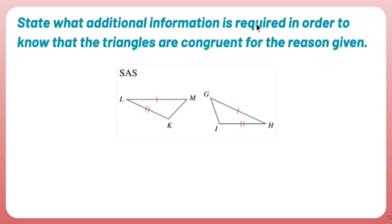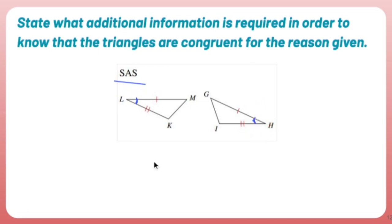State what additional information is required to prove the triangles congruent by SAS. SAS requires a side, an included angle, and a side. The two sides given are FL and GL on one triangle, and GH and IH on the other. The angle must be in between the two sides — so the included angles are L and H. The additional information needed is that angle L is congruent to angle H.